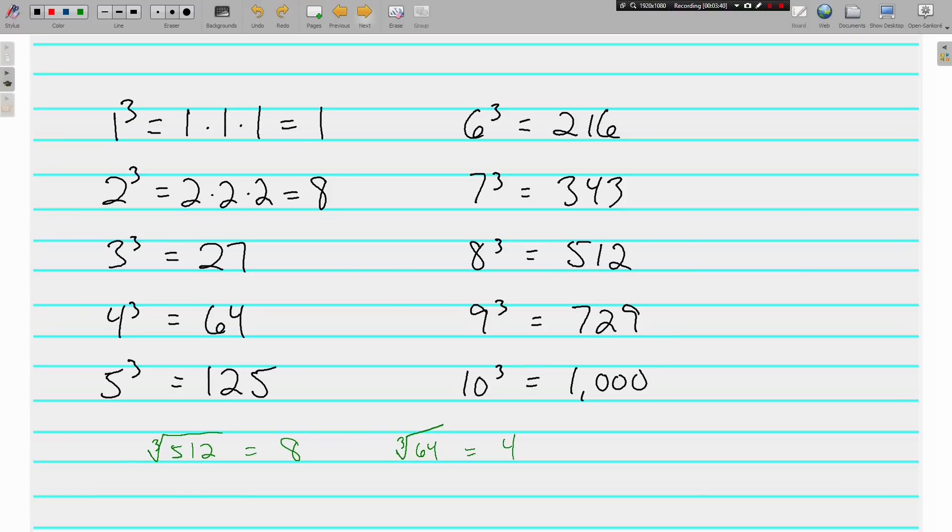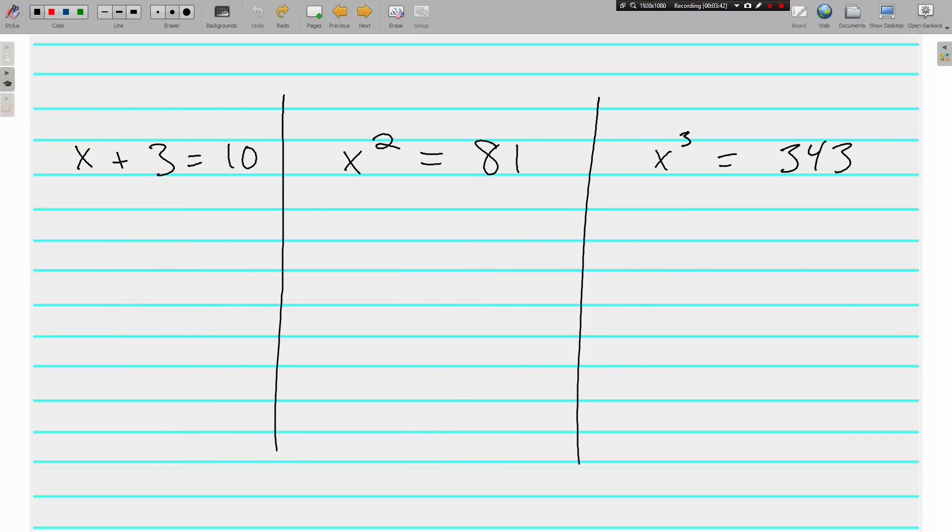Moving on, just want to look at solving equations that have exponents in them. Over here on the left, we know how to do this. When we want to get x by itself, and we've got this positive 3 with it, we subtract 3. And what you do to one side, you do to the other side, leaves us with x is equal to 7.